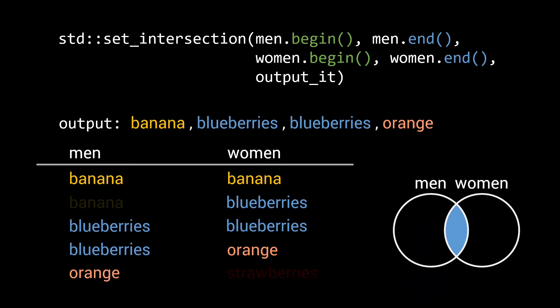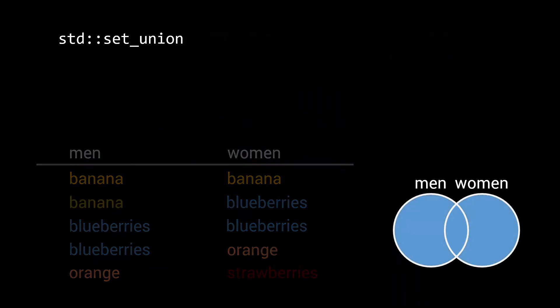Next to set-intersection, the algorithms library also offers the union operation. The union is the set of elements present in one or both of the sorted input ranges.